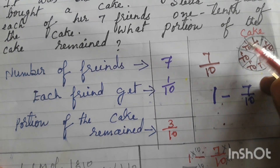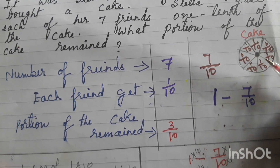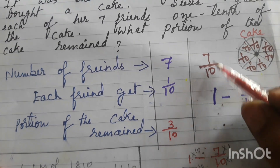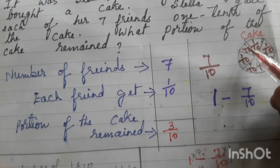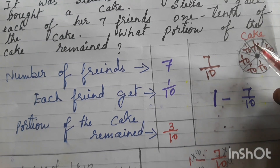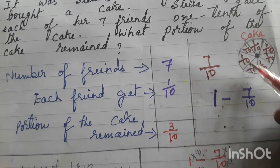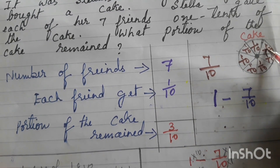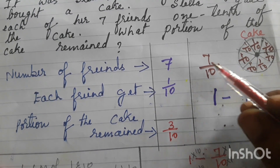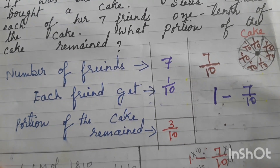To summarize: each friend gets one by ten. Adding one by ten seven times gives seven by ten. That is the total portion distributed to the seven friends.